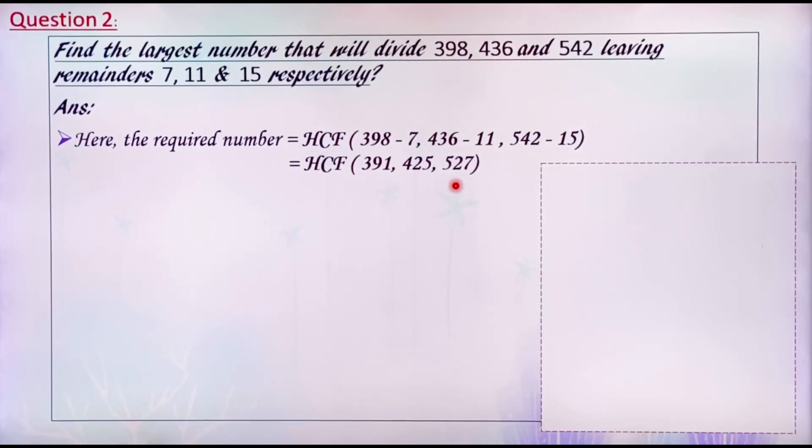Actually, Euclid's division lemma holds for 2 positive integers but here we have 3 numbers. So, select any 2 numbers and apply Euclid's lemma to get the HCF. Then, find the HCF of the remaining number and the HCF obtained.